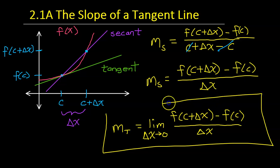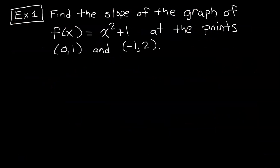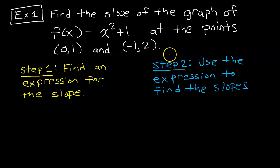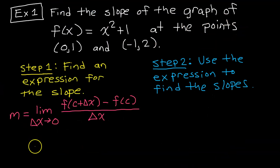The slope of the tangent line at x equals c is also called the slope of the graph at x equals c. Example one: find the slope of the graph of f of x equals x squared plus 1 at the points (0, 1) and (-1, 2). I'm going to solve this in two steps. Step one: find an expression for the slope. Here's the formula for the slope of the graph at c.